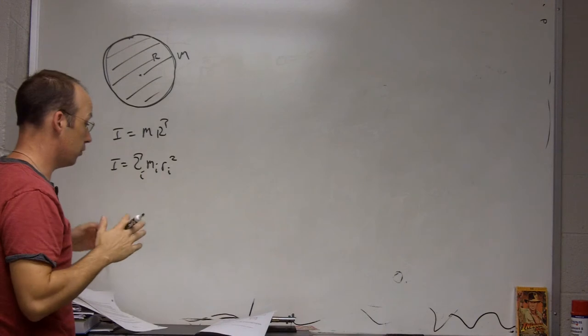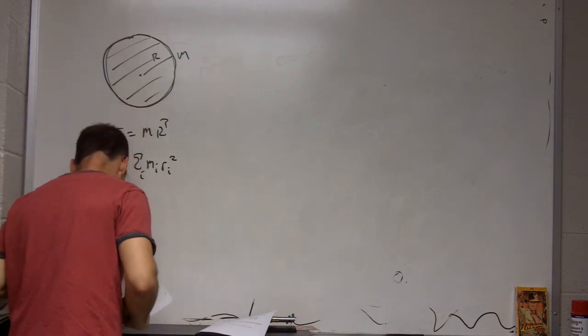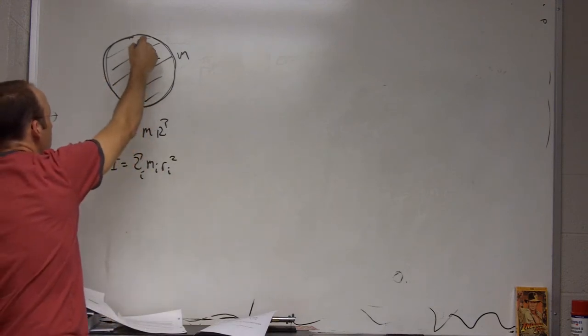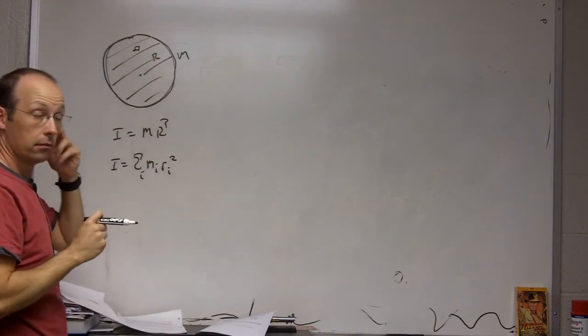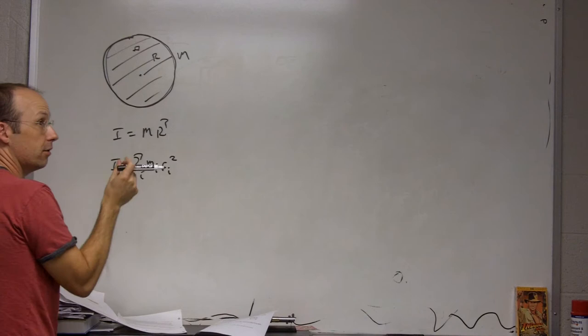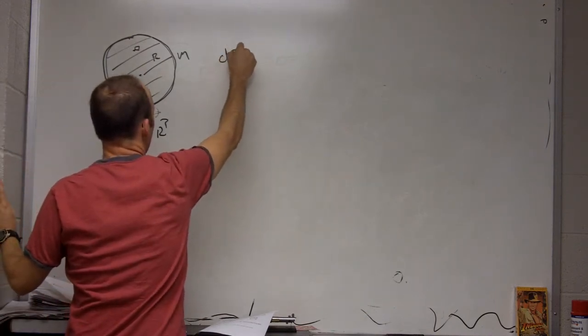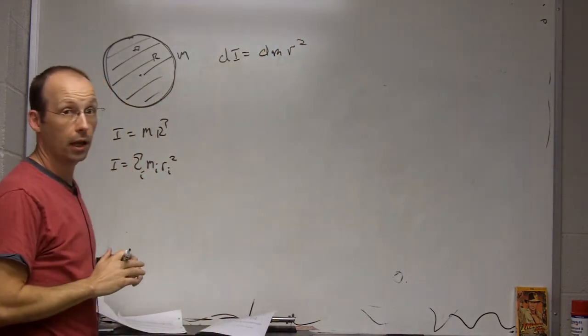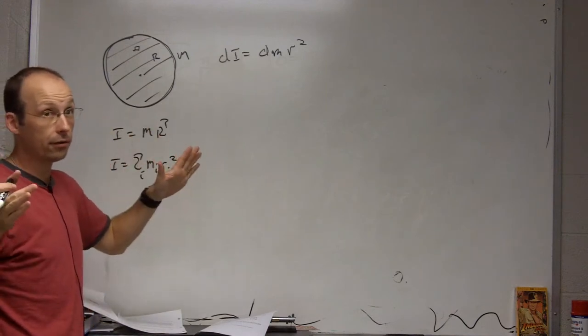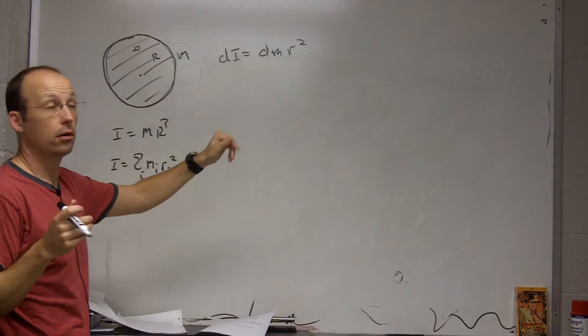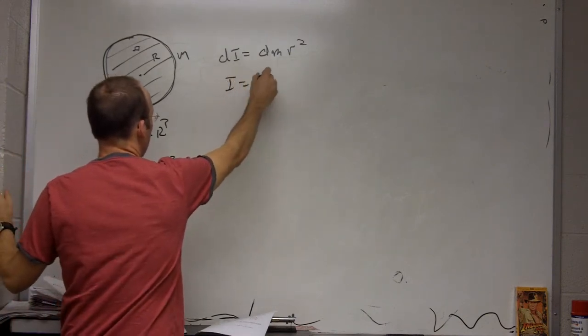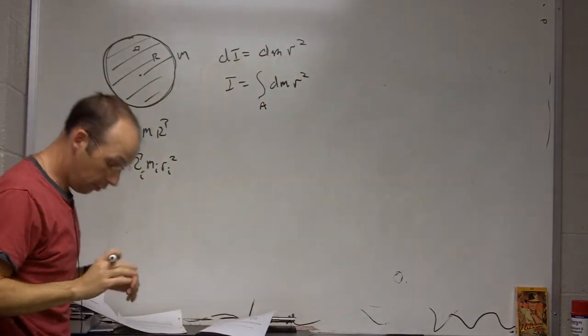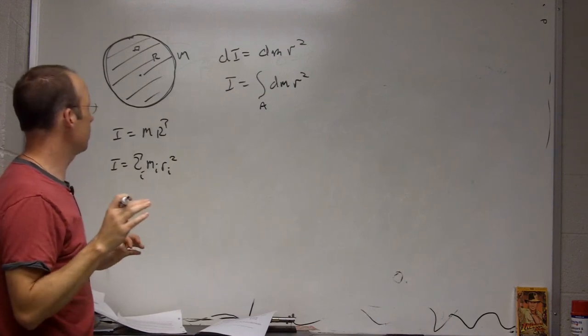So how would you do it? In this case, we would just say let's look at a typical tiny little piece like that. If I find the moment of inertia just due to that piece, I could call that dI equals dm r squared. And then I could add up all those little pieces, and if the piece size is really small, that becomes an integral. So I'd say I equals the integral over that whole area of dm r squared.